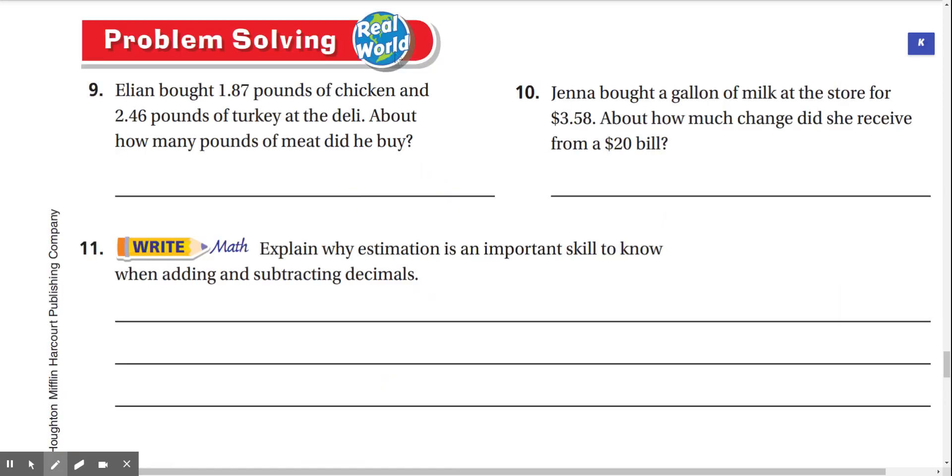Problem solving, real world. Number nine, Elliot bought 1.87 pounds of chicken and 2.46 pounds of turkey at the deli. About how many pounds of meat did he buy? Well, 1.87 is really close to 2. It rounds to 2. 2.46 rounds down to 2. When we add 2 plus 2, that's just 4. So we bought about 4 pounds of meat.